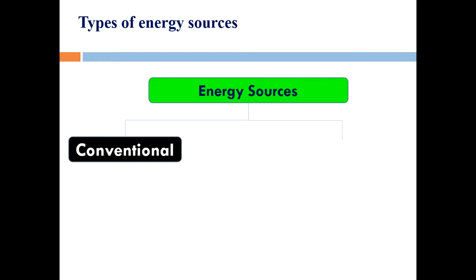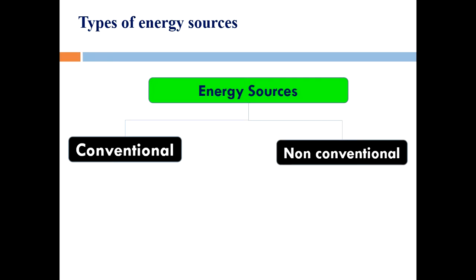Examples of conventional sources are fossil fuels like coal, natural gas, and petroleum. The second type is non-conventional energy sources — these are produced in nature and are non-exhaustible. Non-conventional sources are also called renewable sources of energy. Examples include solar energy, hydro energy, geothermal energy, wind energy, and tidal energy.